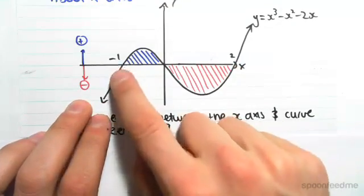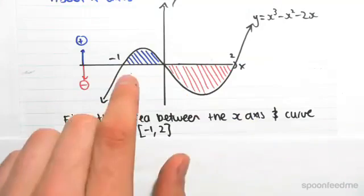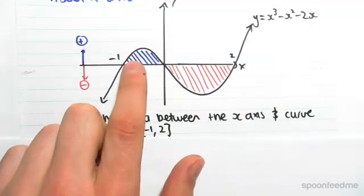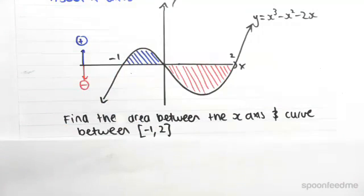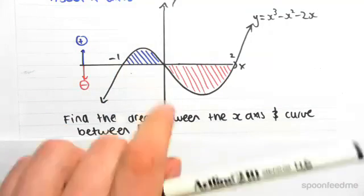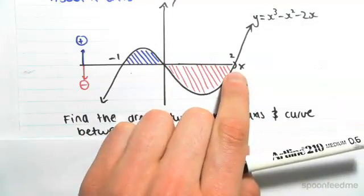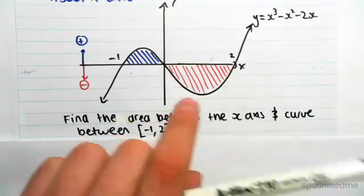You can see that between minus 1 and 0 we have positive, we're above the x-axis, which means when you evaluate that definite integral it would be positive, whereas between 0 and 2, when you evaluate that integral, you're going to get a negative answer.